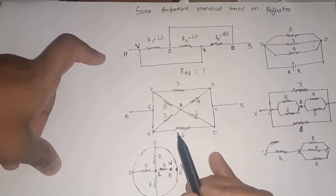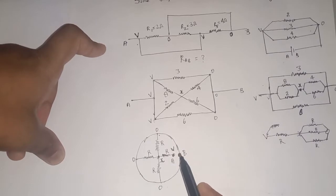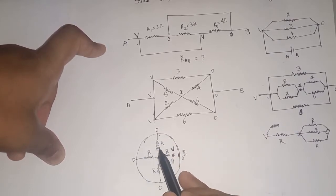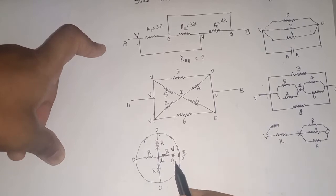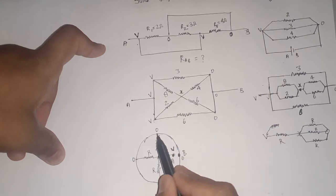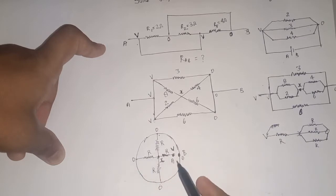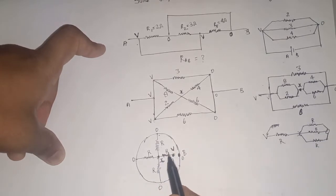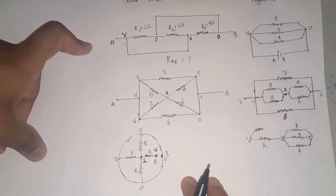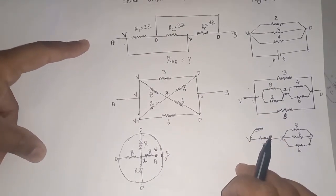Observe this figure. This figure has terminals. Here is a terminal. In this whole circle, here are the registers — R, R, R. This figure is very easily converted, and you can easily solve your question.